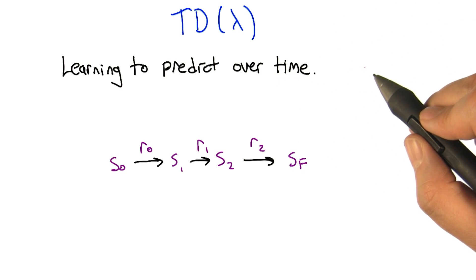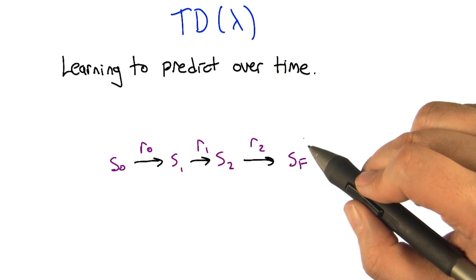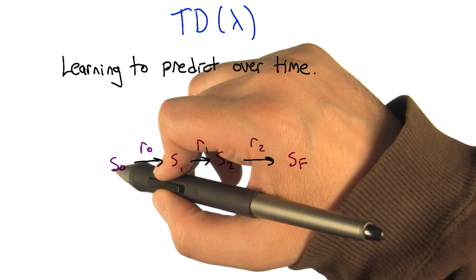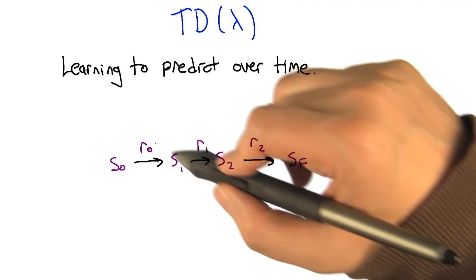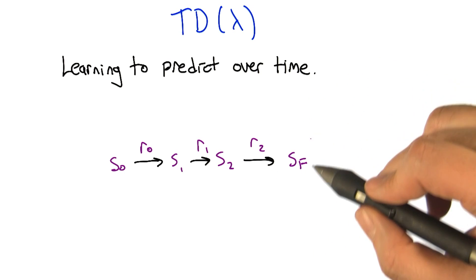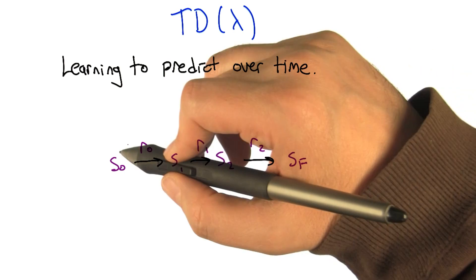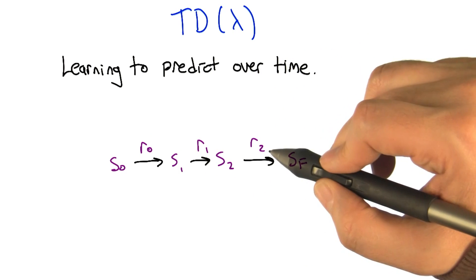What it's really about is learning to make predictions that take place over time. As a concrete example, we're going to look at how we can, from a sequence of states - state 0 goes to state 1, goes to state 2, goes to a final state.